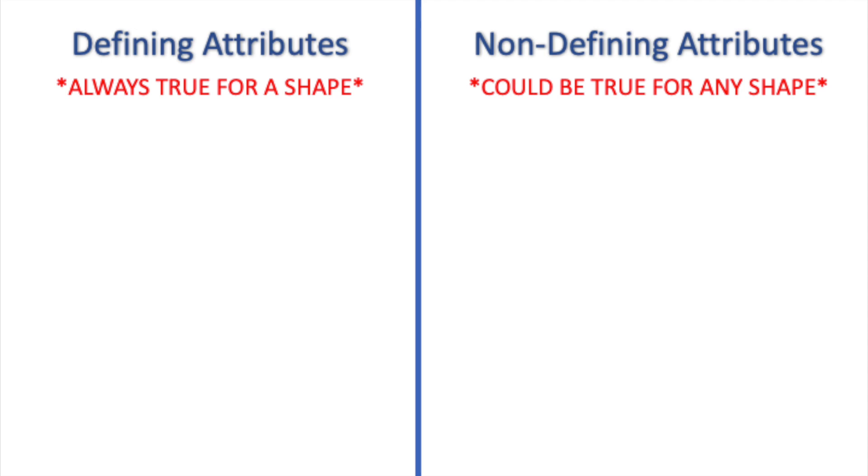So let's see what it means for an attribute to be defining or non-defining. Defining attributes are facts that are always true for a certain shape. But non-defining attributes are facts that could be true for any shape.